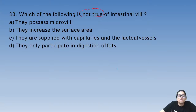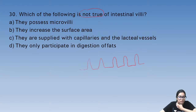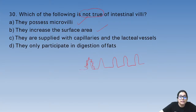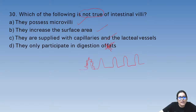What is not true of intestinal villi? Villi are finger-like structures that increase surface area for food absorption. They have microvilli giving a brush border appearance, they increase surface area, and are supplied with capillaries and lacteal vessels — but they only help in absorption, not digestion of fats.